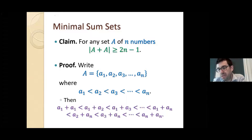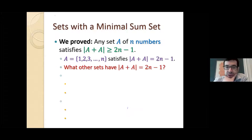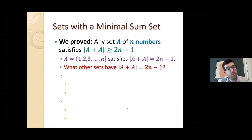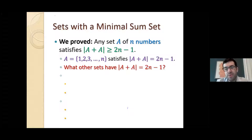So we proved that any set of N numbers has a sum set of size at least 2N−1, and we have an example showing this is best possible: A = {1, 2, 3, ..., N} gives sum set {2, 3, 4, ..., 2N} of size exactly 2N−1. There's no hope of improving our proof. But is this the only set that achieves the minimum? Is {1, 2, ..., N} the unique set that leads to 2N−1?